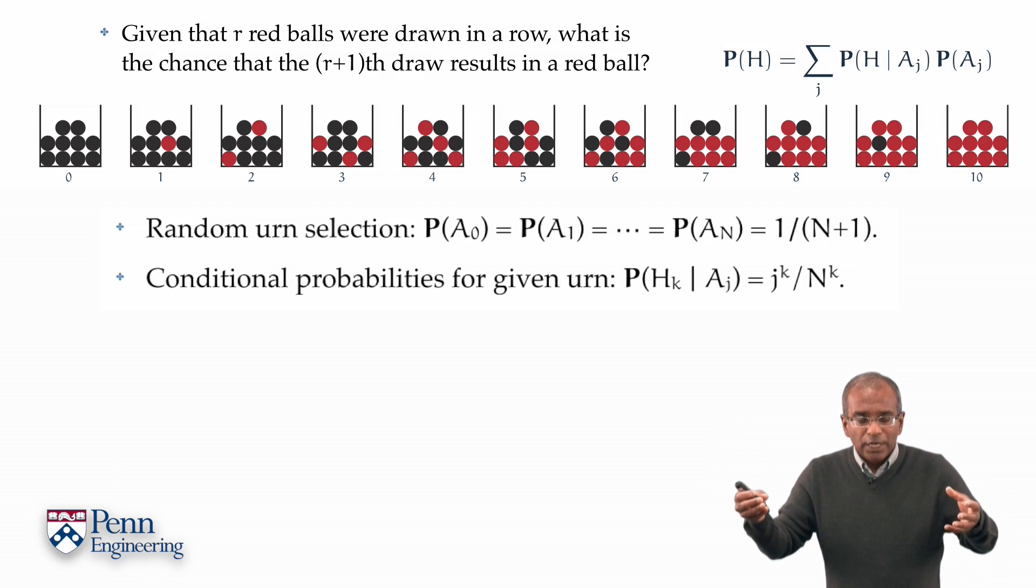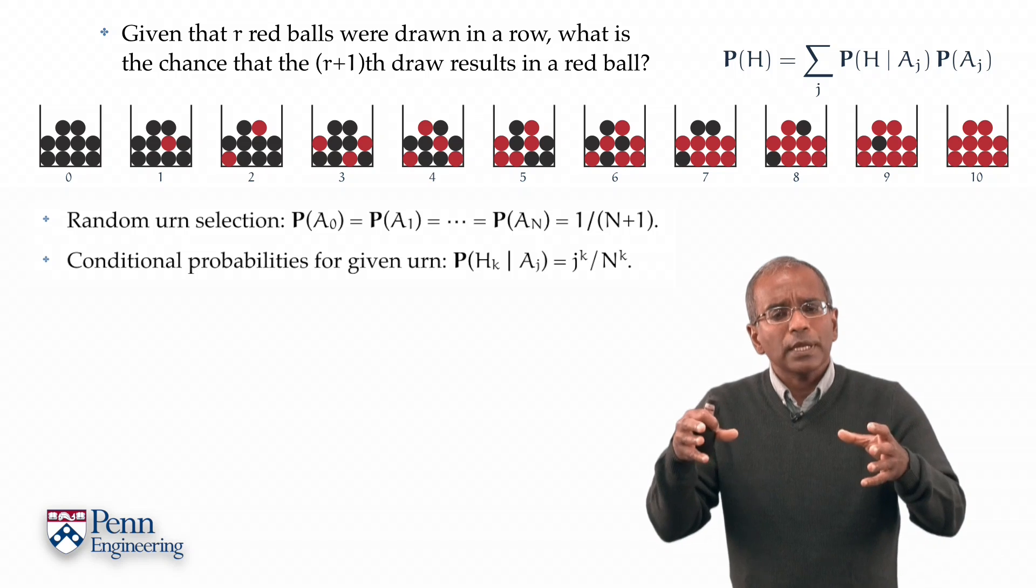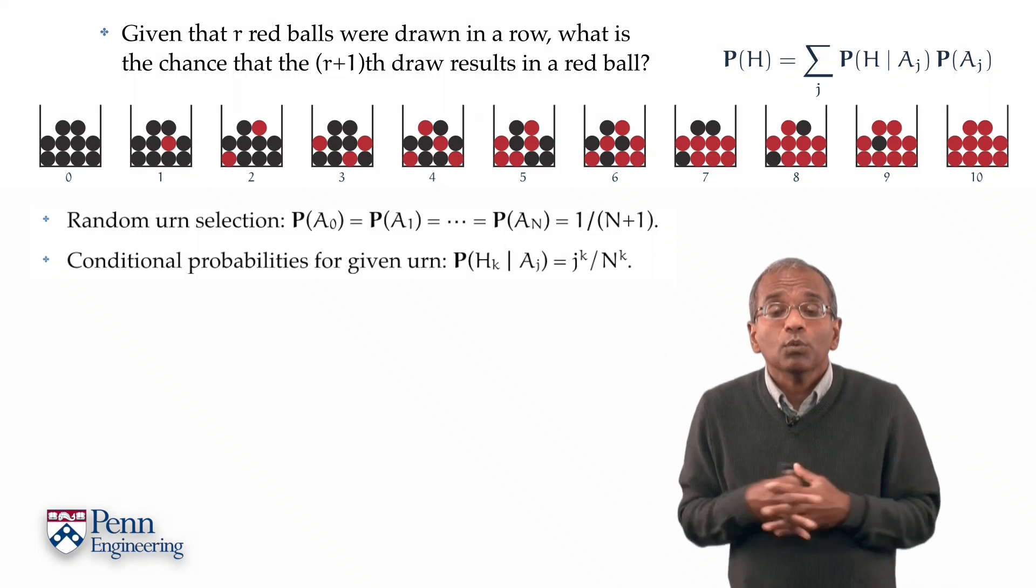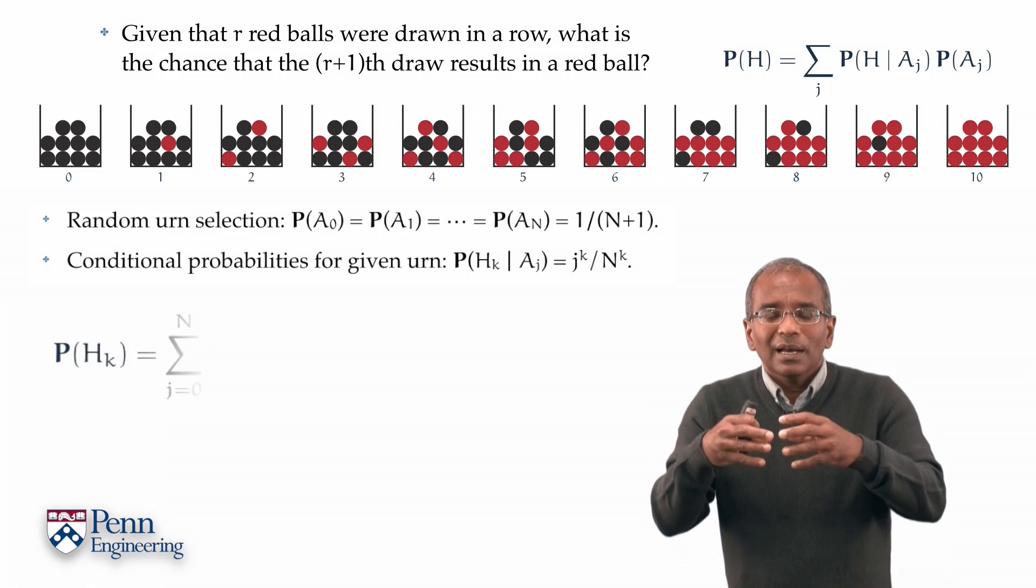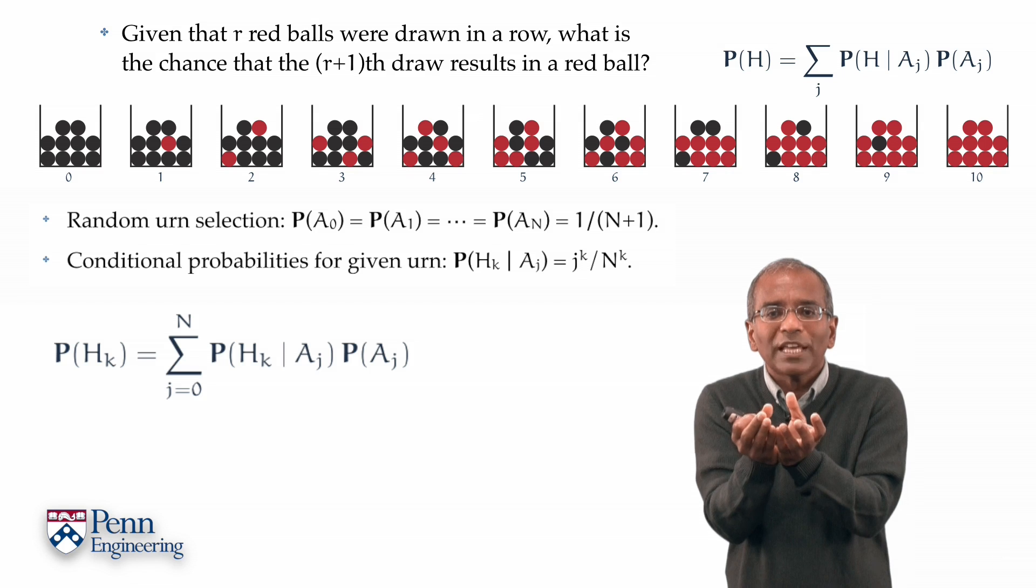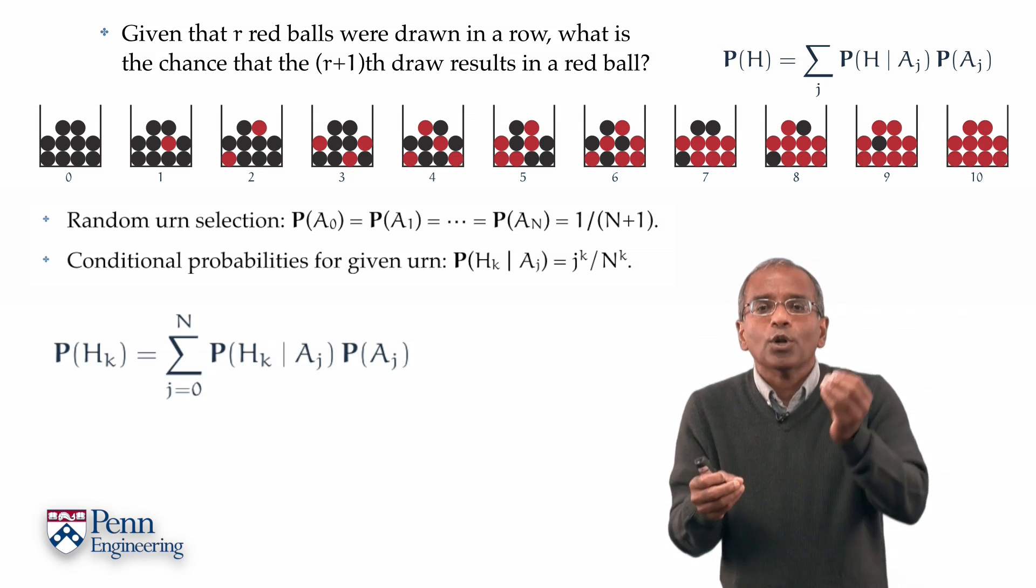Recall, the implicit measure places equal mass on the events A0, A1 through An, and gives you conditional probabilities in a very natural sense. Suppose we ask, what can I say about the probability that k red balls in a row were chosen from whichever urn was selected? The event Hk now stands in the role of the event H in the definition of conditional probability on your upper right.